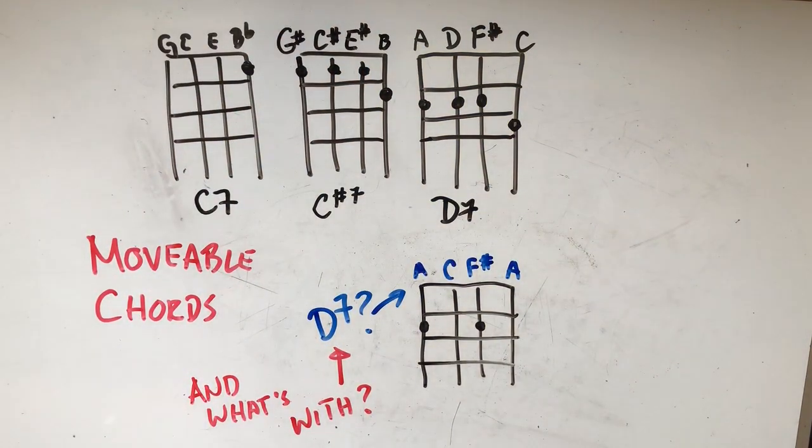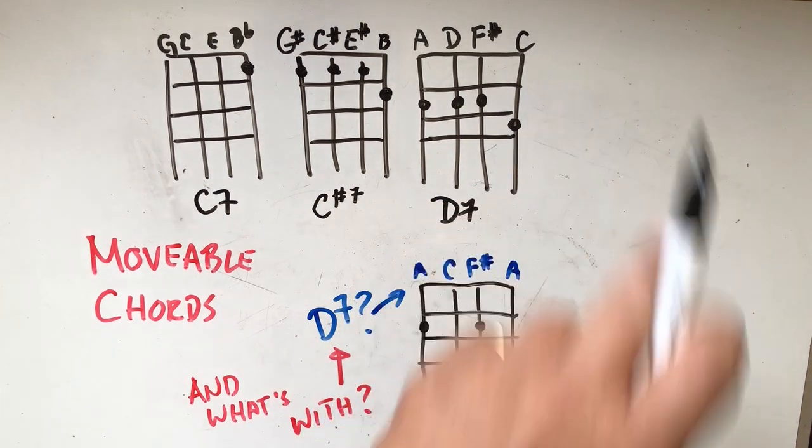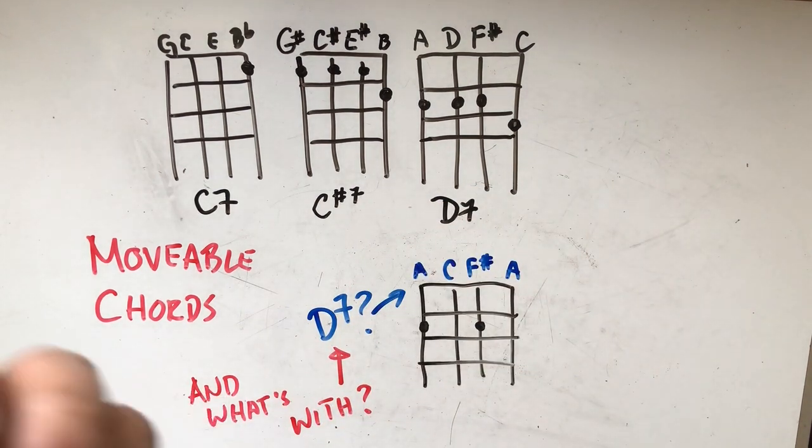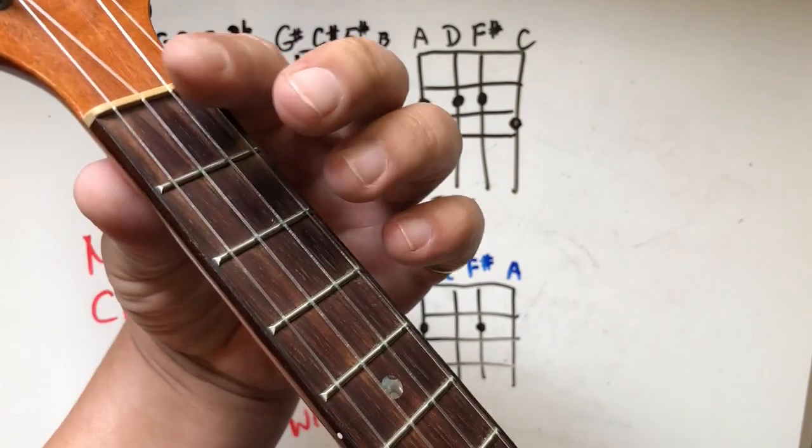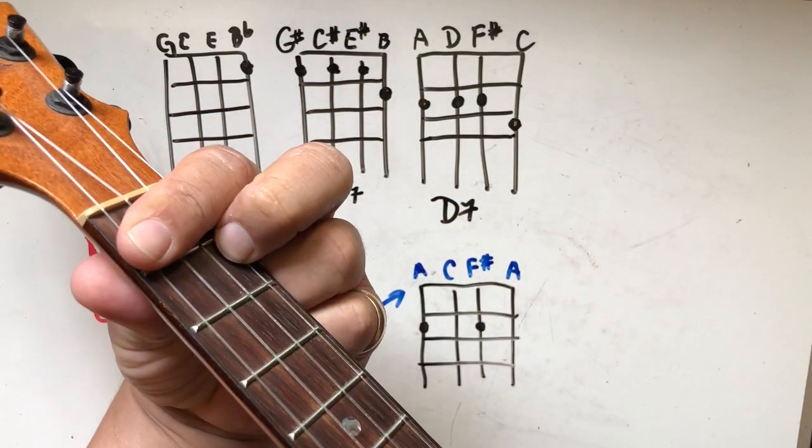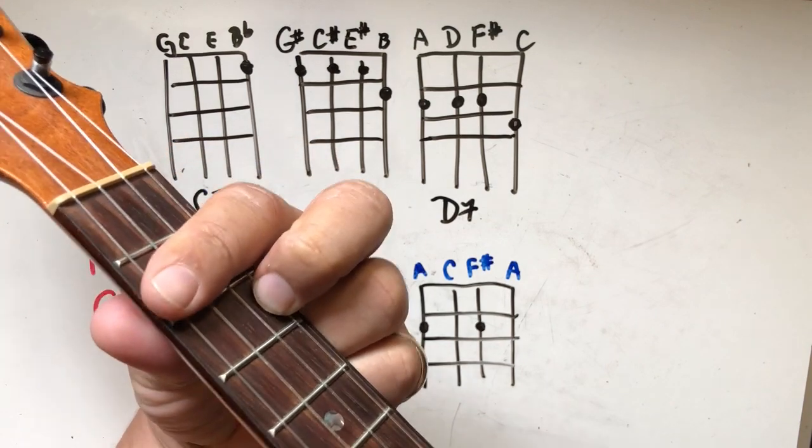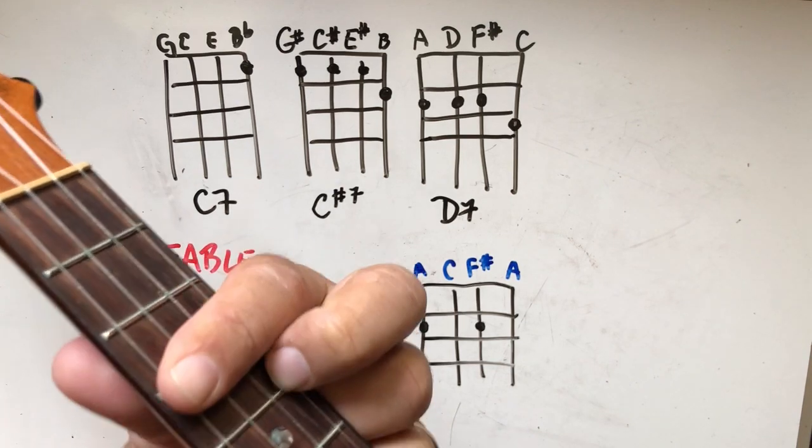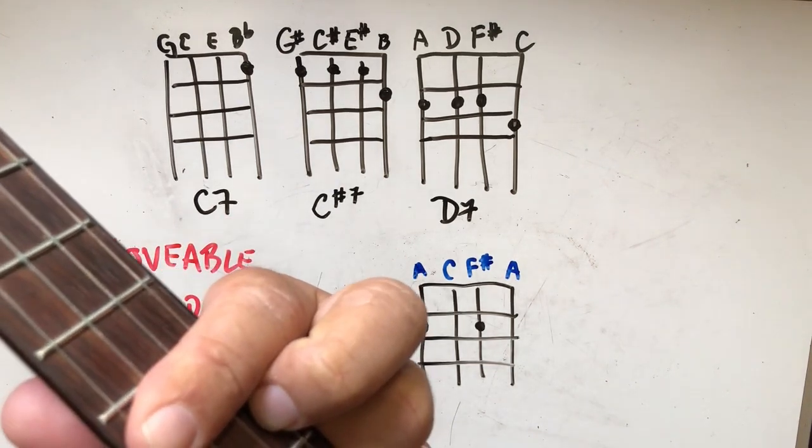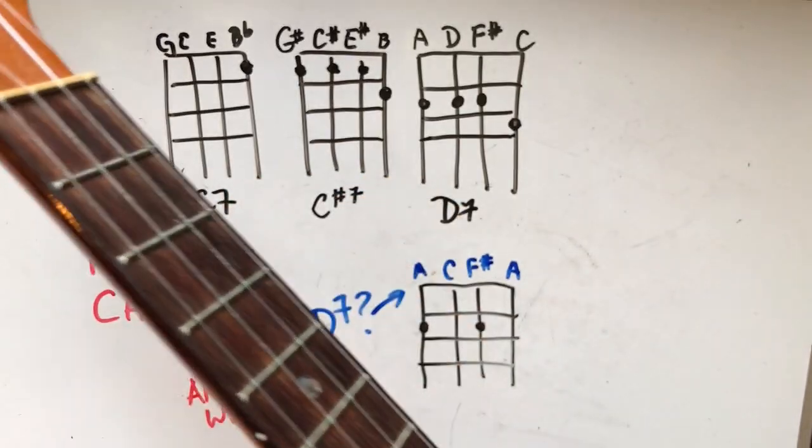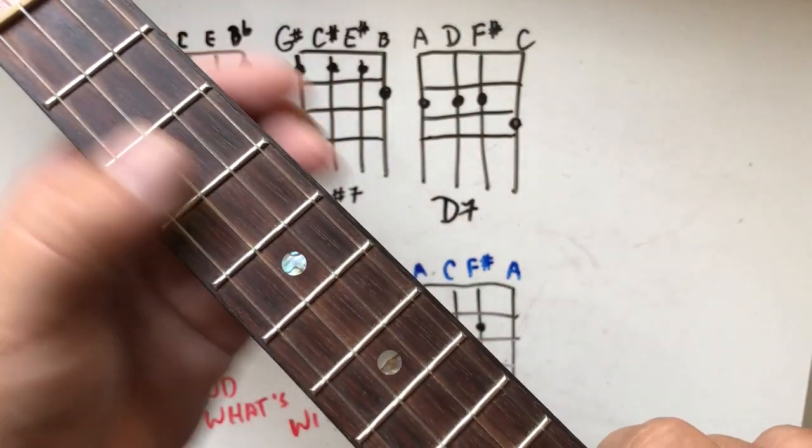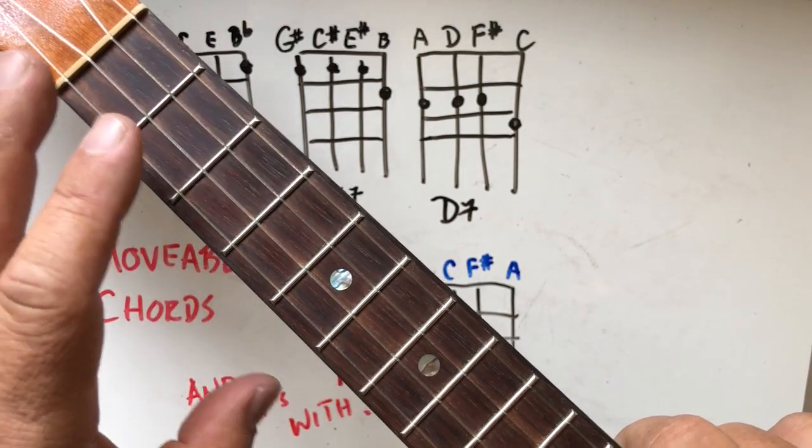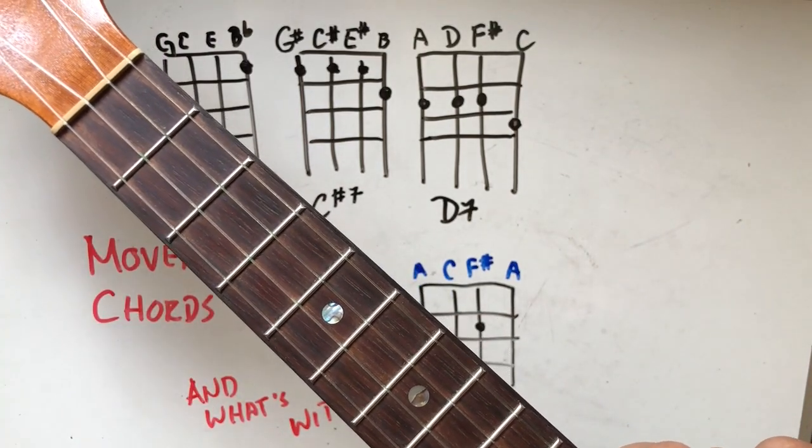So D7 is D F sharp A, a D major triad, and a whole step below the root which is the C right there. So here we go: C7, that blocks those all down to get those three notes there, C sharp seven, D7, D sharp seven, E flat seven, E7, F7, and so on. It's a movable shape because none of the strings are left open to ring free, and as you move the other fingers around then you get notes that are not part of the chord.